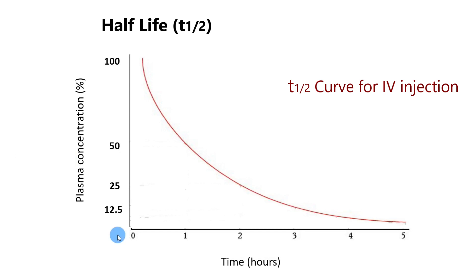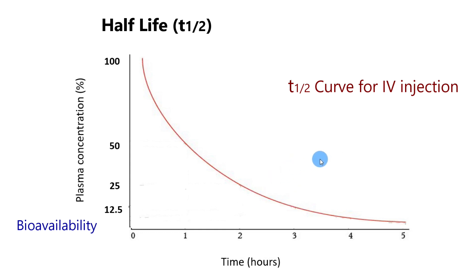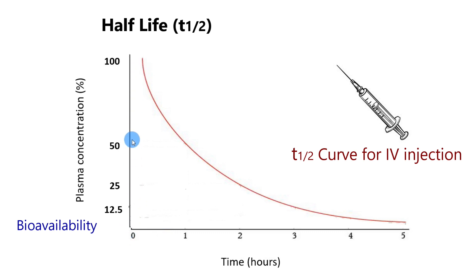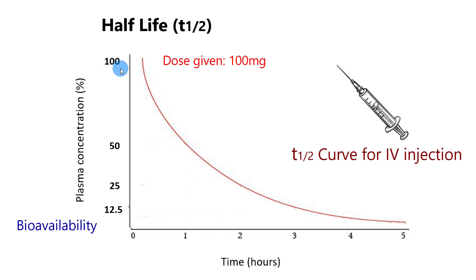Before going further, let me introduce you to the term bioavailability. Bioavailability is the fraction of the drug that reaches the plasma in an unchanged form. In this example we are discussing a case in which the drug is given by IV bolus — a direct IV injection — which means the plasma concentration will increase very rapidly. If 100 milligrams of a drug is given by IV injection, we assume that 100% of the drug will reach the plasma and achieve 100% concentration in a very short time.